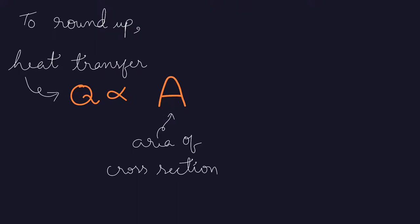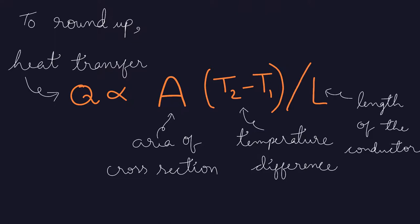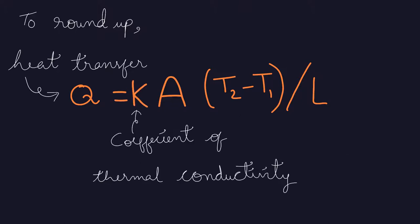To round up, heat transfer is proportional to area of heat transfer and temperature difference, while it is inversely proportional to the length of the conductor. To convert this into an equation, a proportionality constant needs to be put. This is called the coefficient of thermal conductivity.